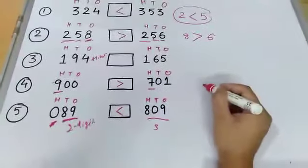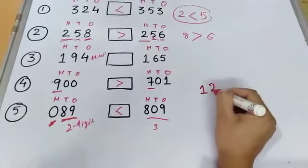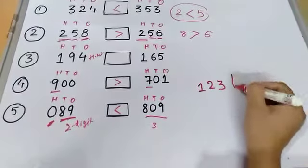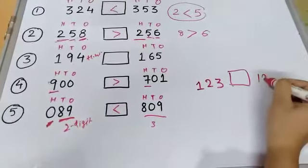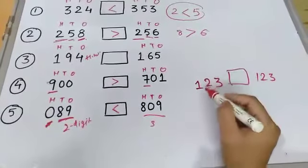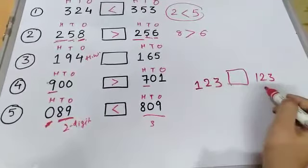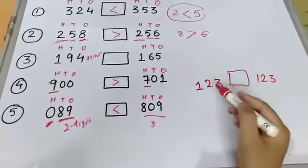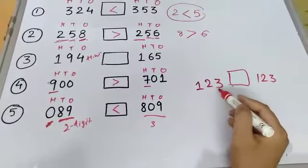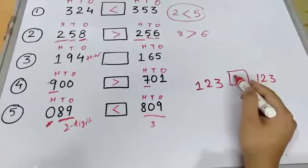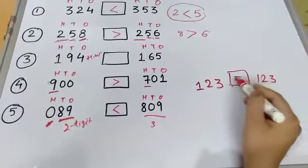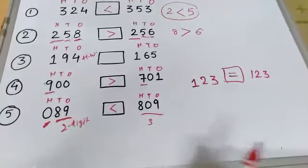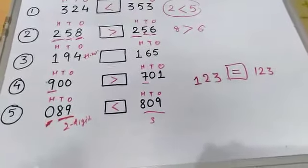Is it clear to all of you? Now for equal to, here I have 123, here also I have 123. Now look over the numbers, both are greater or less or equal? The both numbers have same number of digits, so both the numbers are equal. So this is the equal to sign. I hope everything is clear now.